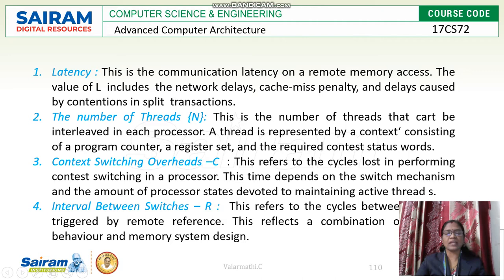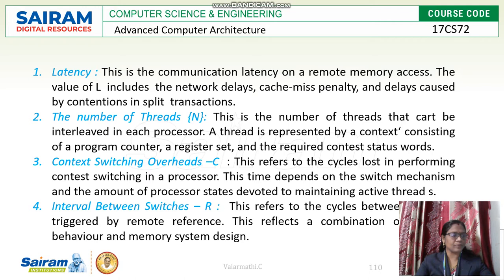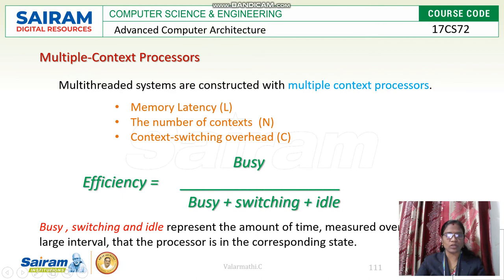Context switching overhead is the time taken to switch threads in a multi-threaded environment. It refers to the cycles lost in performing context switching in the processor. The interval between switches, represented by capital letter R, refers to the cycles between threads which are triggered by remote references. These are the four important parameters to be considered in a multi-threaded environment.